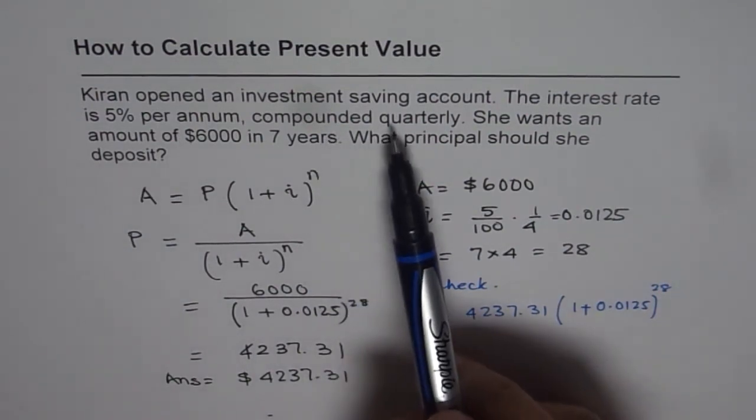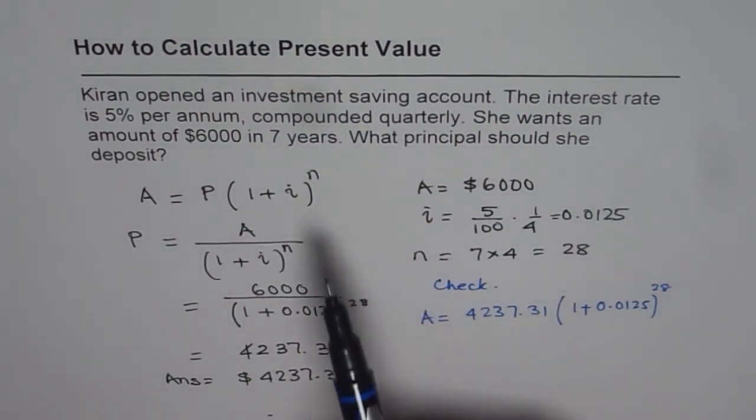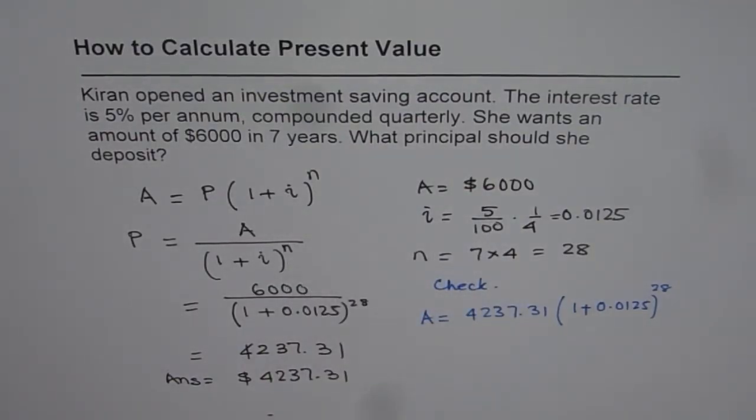So that is how these questions should be done. The important thing here is, if the compounding period is not annual, then you have to adjust the values of i and n and that is how we do it. I hope that's absolutely clear. Thank you and all the best.